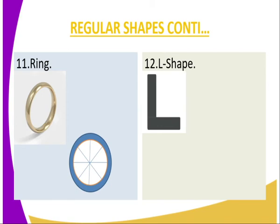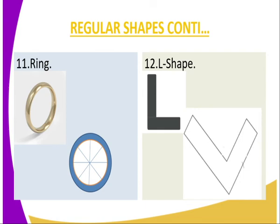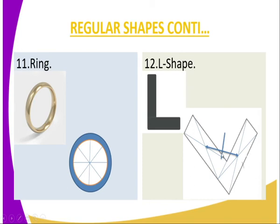For an L-shaped object, first divide the L-shape into two rectangles, then construct diagonals on each rectangle. Join the points of intersection and bisect the line — the point where the perpendicular bisector meets the line is the center of gravity. Notice that the center of gravity of this regular shaped object falls outside the object itself.